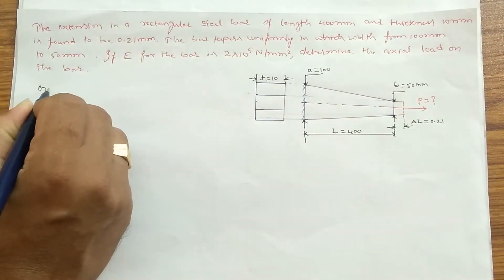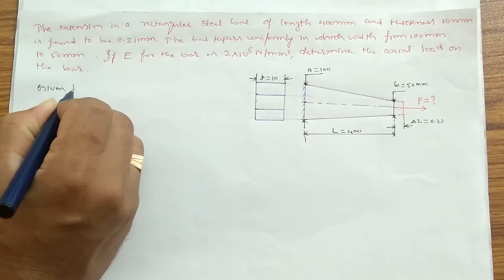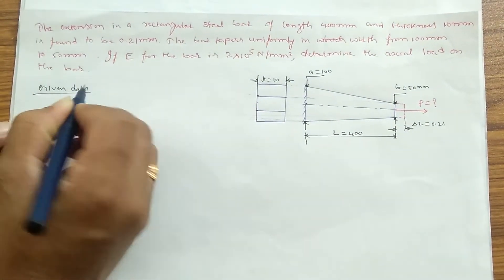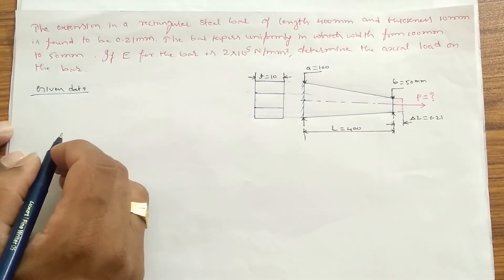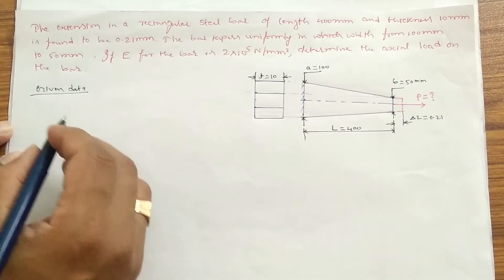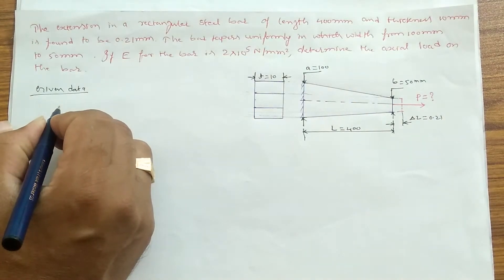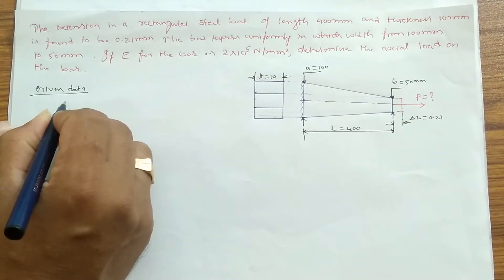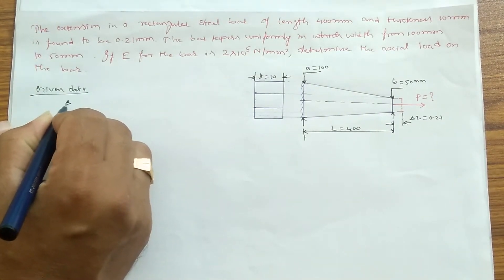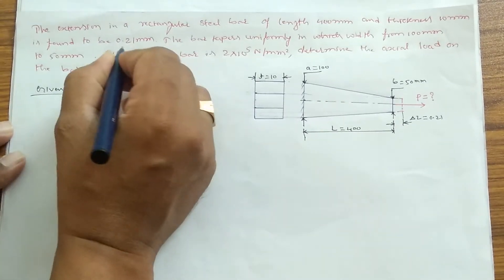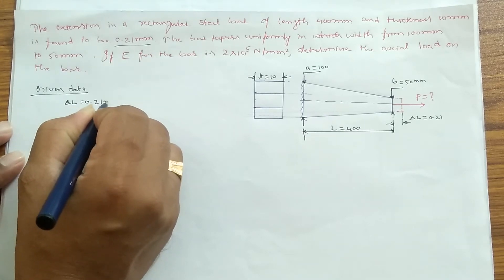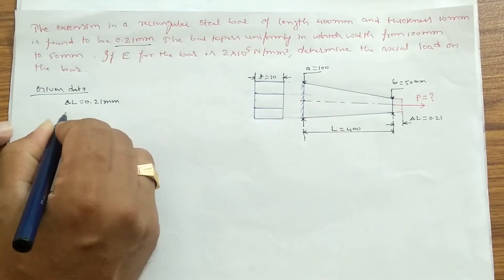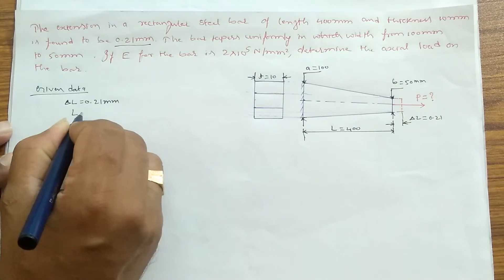So first, let's list out what are all the given data. The given is delta L, that is change in length, so the value is 0.21 mm. Then length, the original length, that is 400 mm.